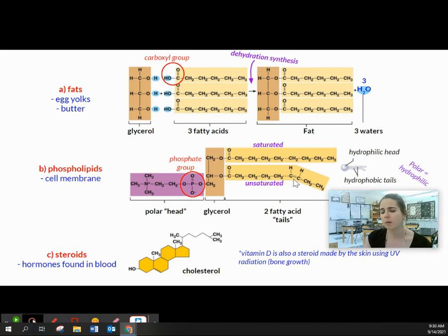Because of these double bonds, our body has a little bit harder time breaking down unsaturated fats. And so these tend to be what we describe as the less healthy fats that we have in our diet just because there's double bonds in there.